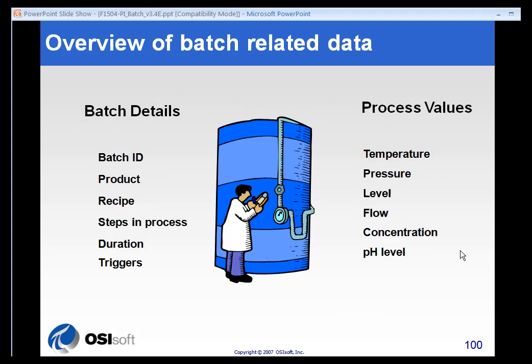What our batch system does is it generally separates everything into one of two categories. The first category you're already familiar with: process values. These are all variables or values that are tracked based on what you're producing. In a batch context, these are going to be aliases for tags that you're already measuring.